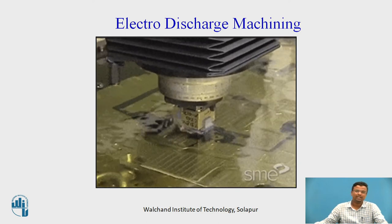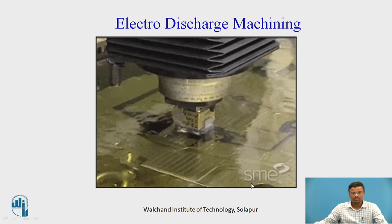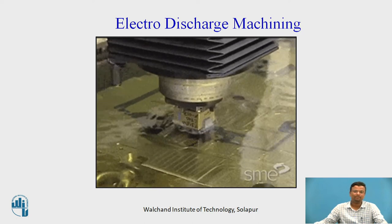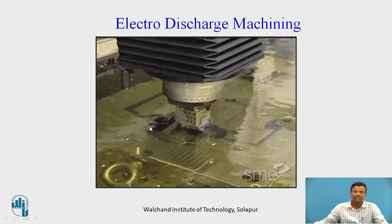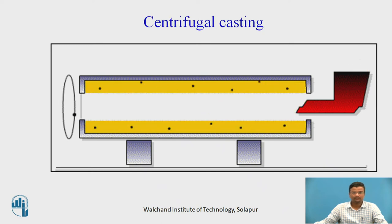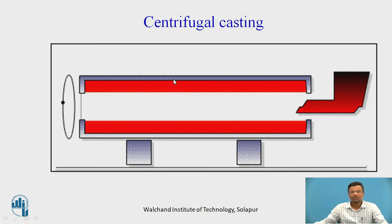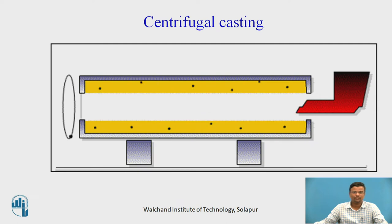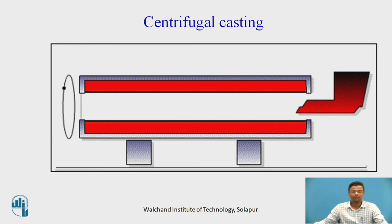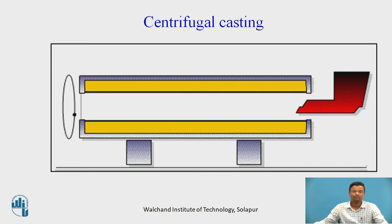Electro discharge machining (EDM) is a type of non-conventional machine tool. There is no metal removal process in EDM, but we are not providing any CAD data to the EDM machine tool. Another example is centrifugal casting used to develop different types of bearings with materials like titanium-based alloy or nickel-based alloy in submarine gear boxes.